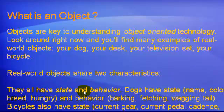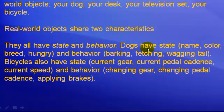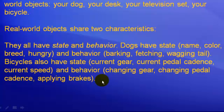Real-world objects share two characteristics: they all have state and behavior. For example, dogs have state — name, color, breed, hungry, etc. — and behavior — barking, fetching, wagging tail, etc. Bicycles also have state — current gear, current pedal cadence, current speed, etc. — and behavior — changing gear, applying brakes, etc.